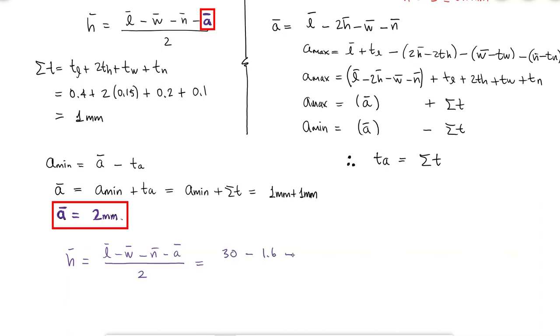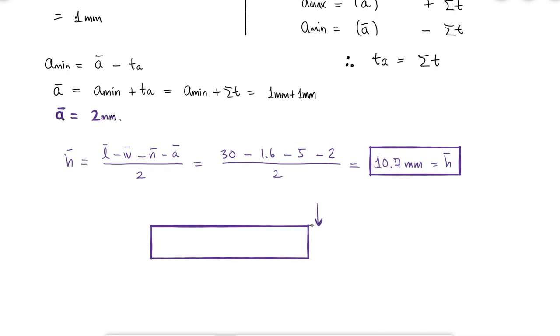In my drawing, I would dimension H as 10.7 plus or minus 0.15 millimeters. Quickly checking that these values make sense, the minimum value of A will occur when the length of the bolt is the shortest at 29.6 millimeters,